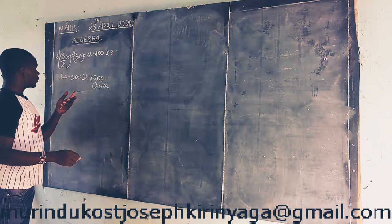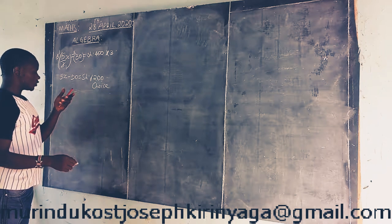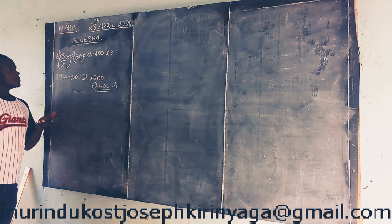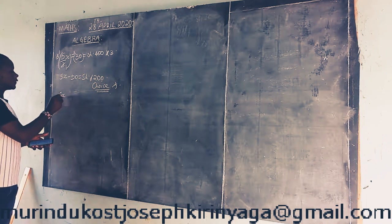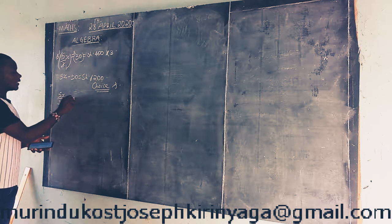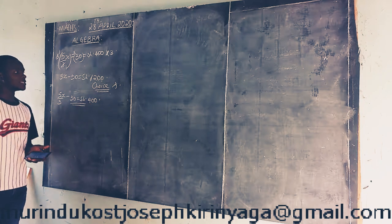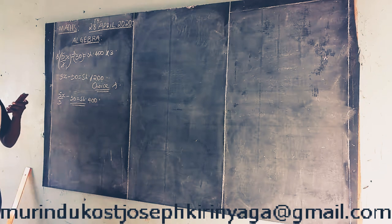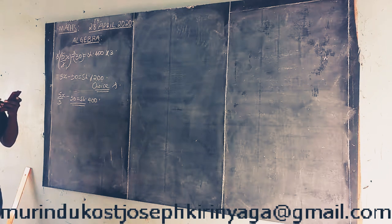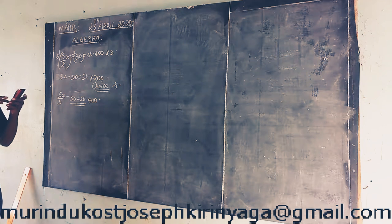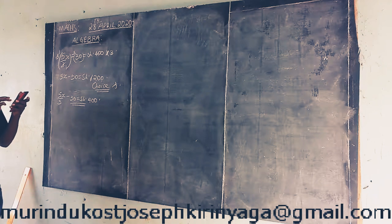This should be choice A. So 5 over 3x minus 30 equals 400 shillings can also be an answer, but according to our choices we do not have that answer. That is how we form an equation to be used to solve a contribution problem.